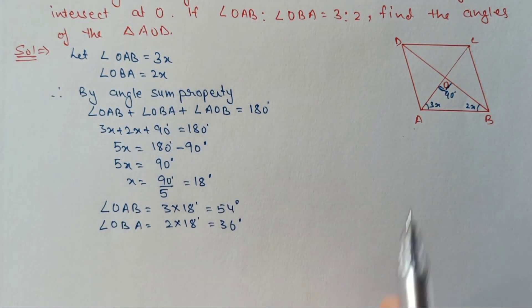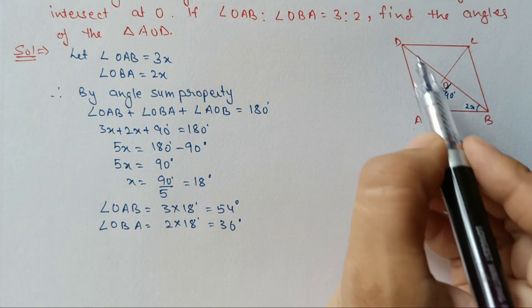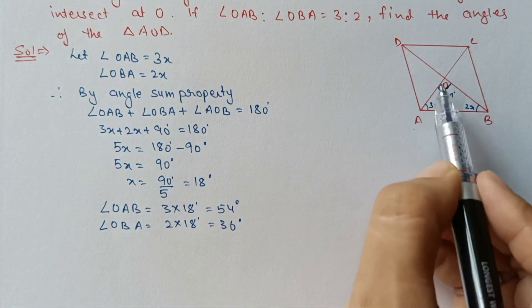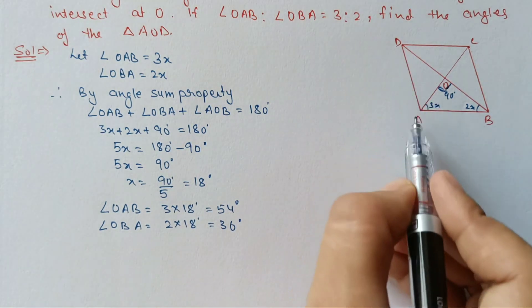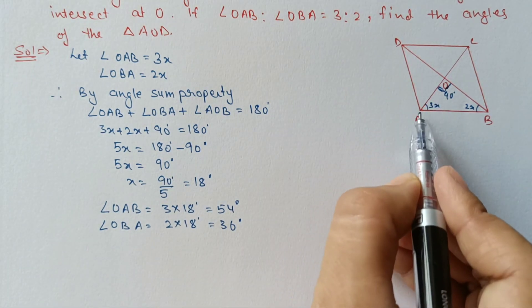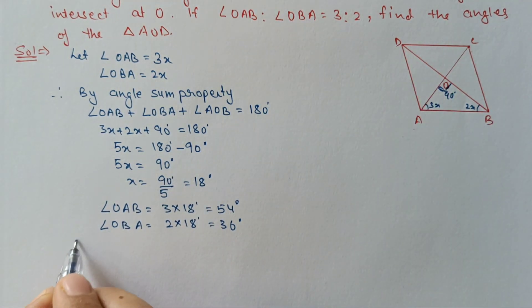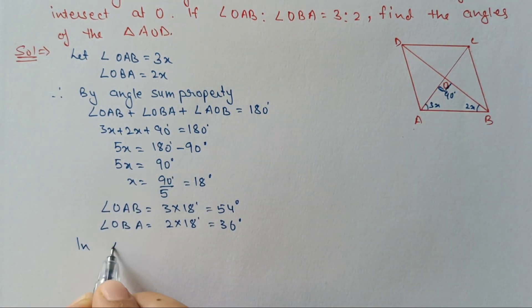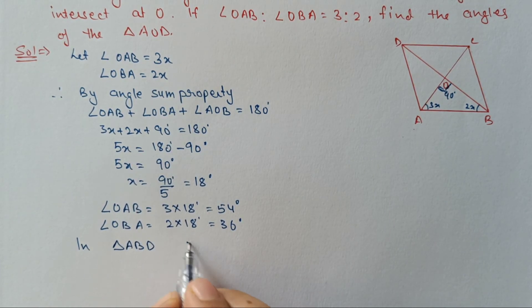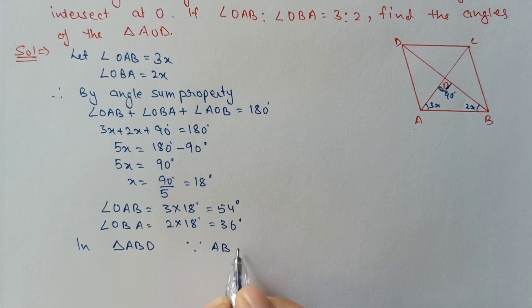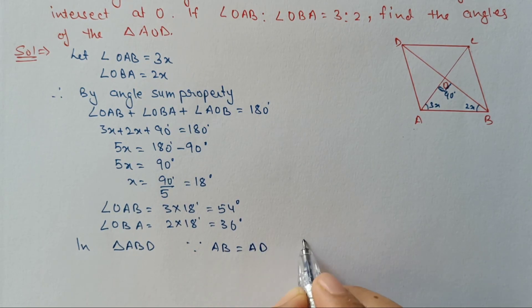Now to find the angles of triangle AOD. In triangle ABD, AB equals AD because ABCD is a rhombus and all four sides are equal — so it is an isosceles triangle.